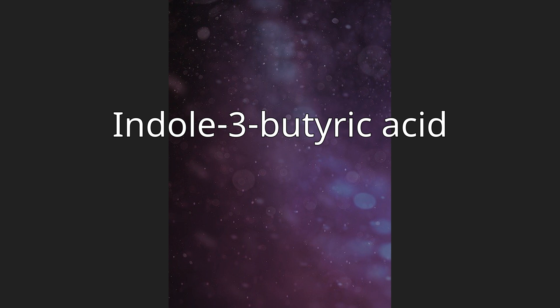Indole-3-butyric acid, also known as 1H-indole-3-butanoic acid or IBA, is a white to light yellow crystalline solid with the molecular formula C12, H13, and O2. It melts at 125°C at atmospheric pressure and decomposes before boiling.